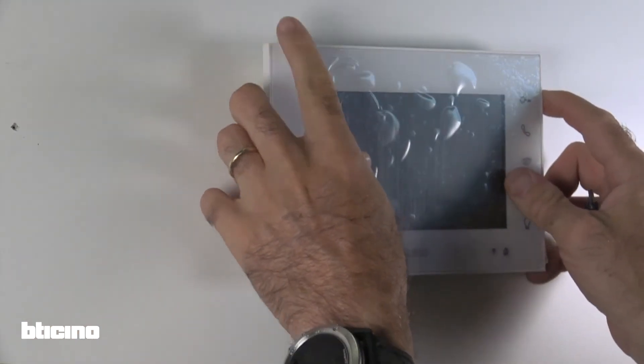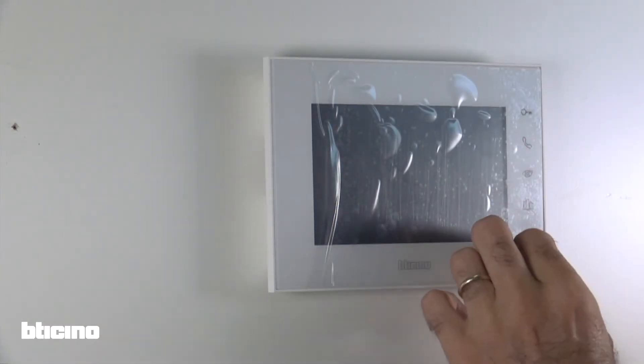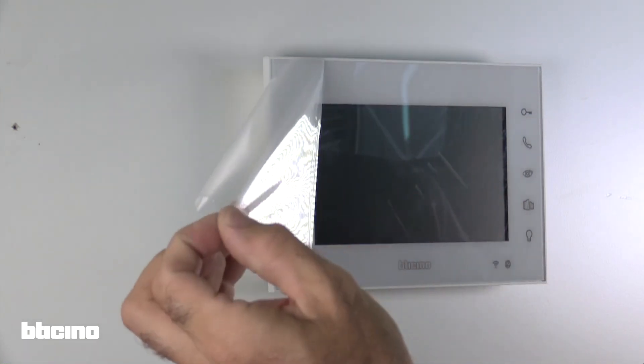Attach the monitor to the wall bracket and connect the power supply plug to a power point and turn it on. The wiring installation is now complete.